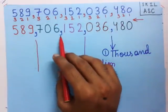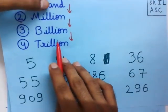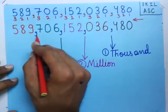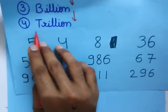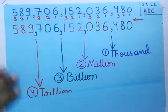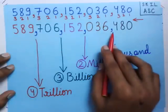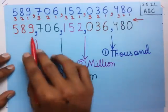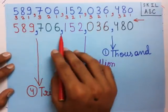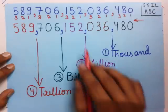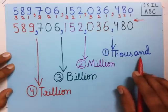When you reach the 4th comma you read trillion, when you reach the 3rd comma you read billion, when you reach the 2nd comma you read million, and when you reach the 1st comma you read thousand.